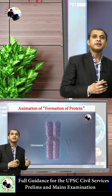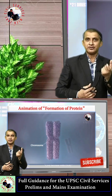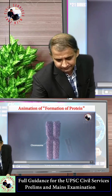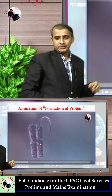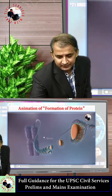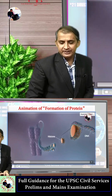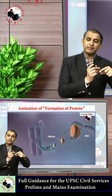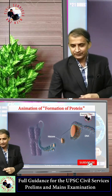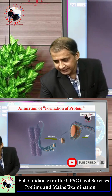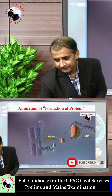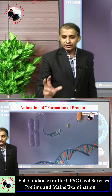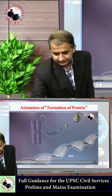Each cell contains a genome with chromosomes. In humans, there are about 23 pairs of chromosomes. These chromosomes contain DNA, and the DNA strands are bound with a protein called histone.